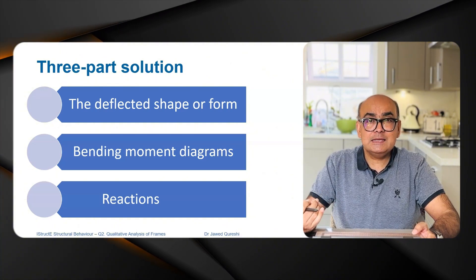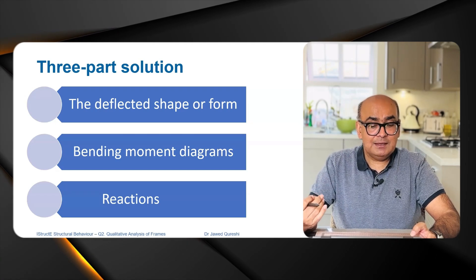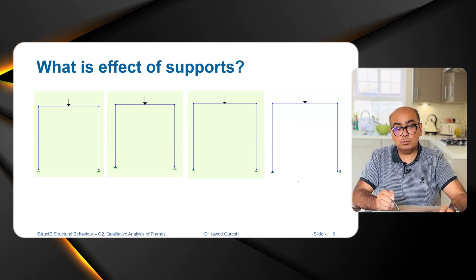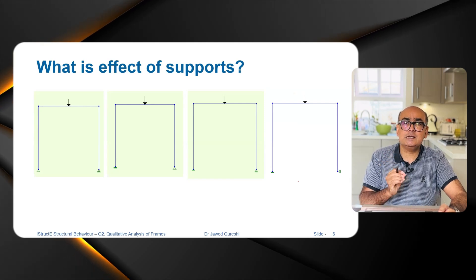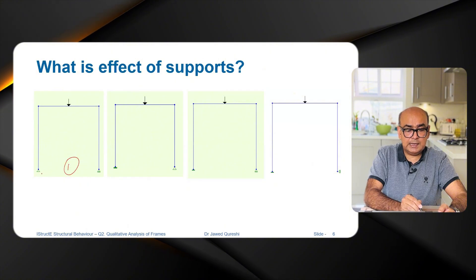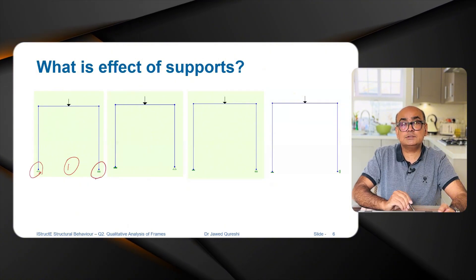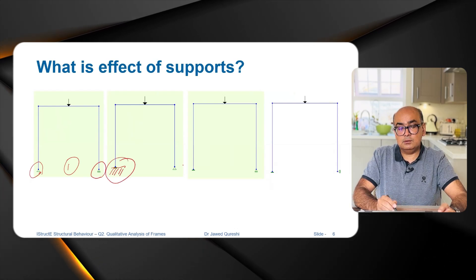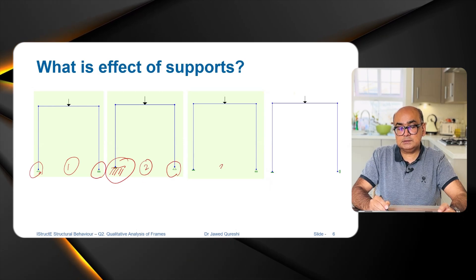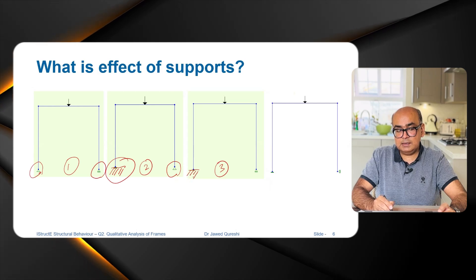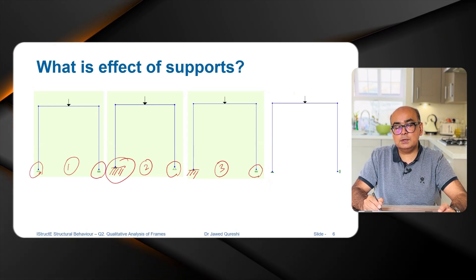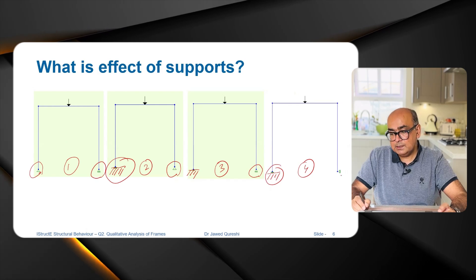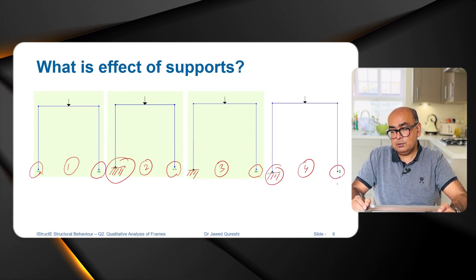These are the four cases I will consider. A central point load is applied to all these frames, but there is a change in supports. For the first case, we have a pin support on the left side and a horizontal roller on the right side. For the second case, we have a fixed support on the left and a pin support on the right. For the third case, I have a fixed support on the left and a horizontal roller on the right. For the fourth case, I have a fixed support on the left and a vertical roller on the right — which is the main question.